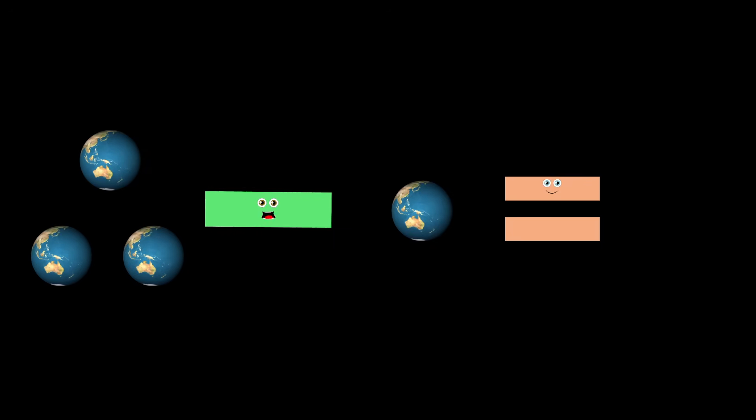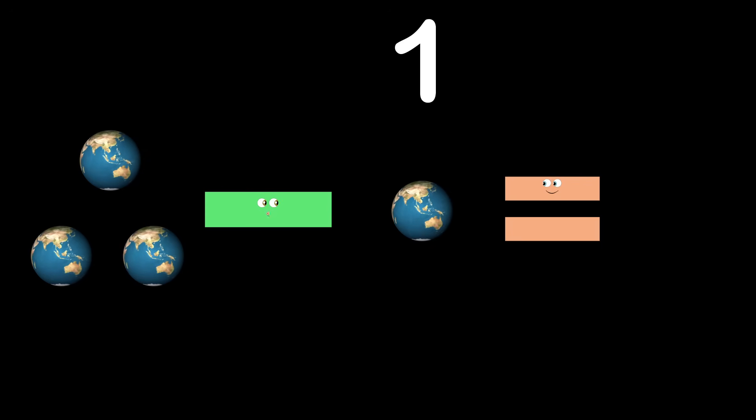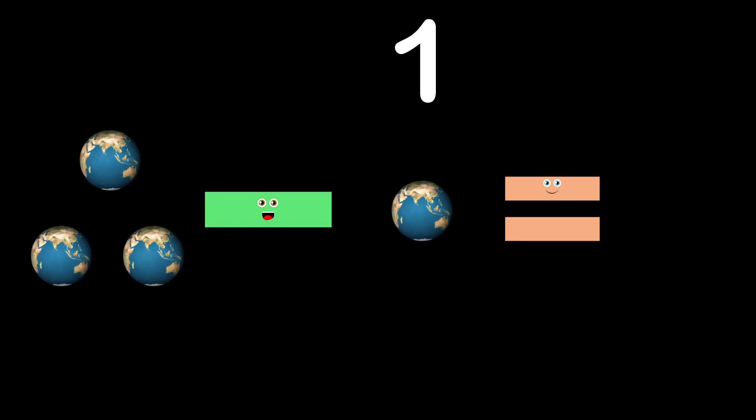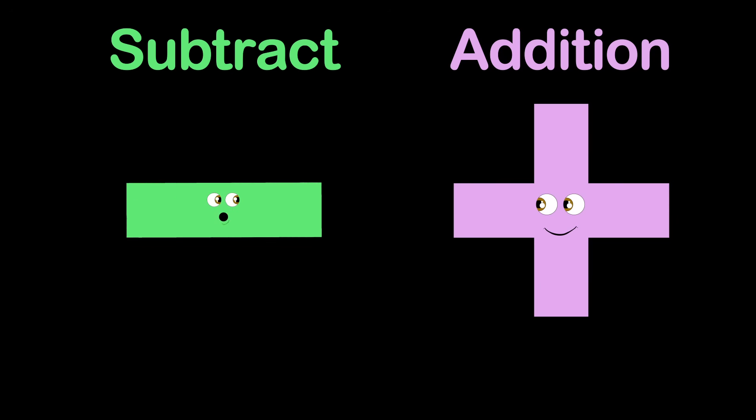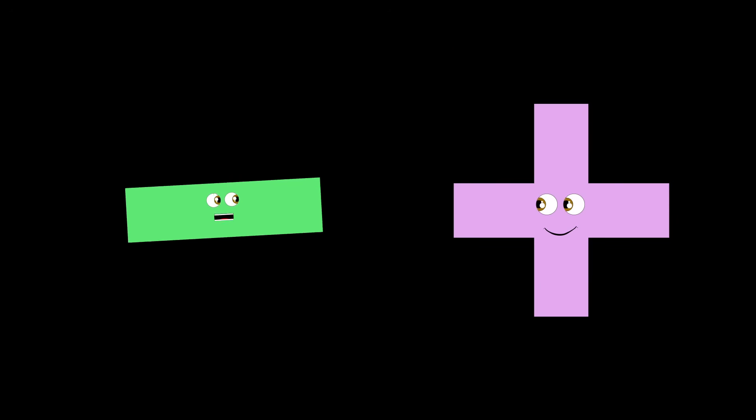I'm a subtraction symbol, and this is how I look. A short horizontal line — you'll find me in any subtraction book. My job's to take away a particular quantity from an amount of anything in a math equation based on me. I'm opposite of the addition symbol, which is used to add. So when you add too much of something, just subtract — you'll feel glad.